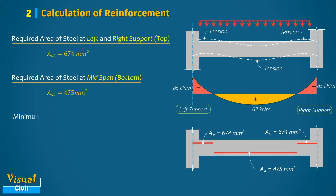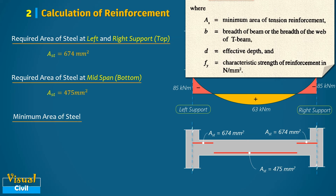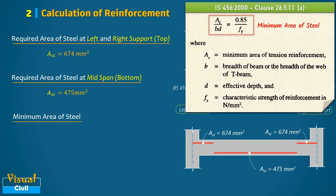Now let us determine the minimum area of steel required according to the IS code. Using the equation provided in Clause 26.5.1.1(a) of IS 456, the calculated minimum steel area is 193 mm², which is less than the required steel area at both the support and mid span.